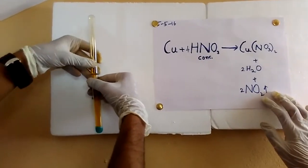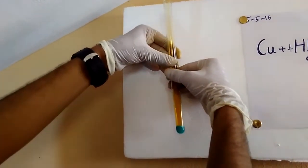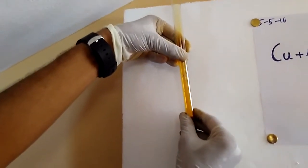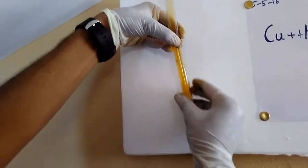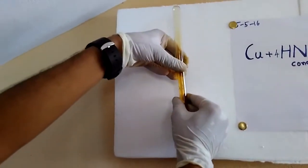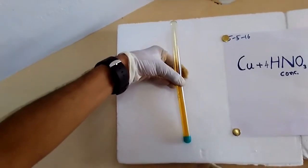Hope you guys liked it. And you can see that there is a good reddish brown gas and a good blue color copper nitrate has been formed. And this reaction is exothermic and this test tube has turned pretty hot. So you can see that there is a good yield of nitrogen dioxide.